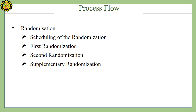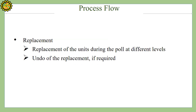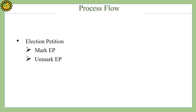Randomization scheduling will be done and there are two types: first randomization and second randomization. If required, supplementary randomization can also be done. Replacement of units during the poll can be done at different levels, and undo of the replacement can also be performed if required. Marking or unmarking of election petitions can also be done.